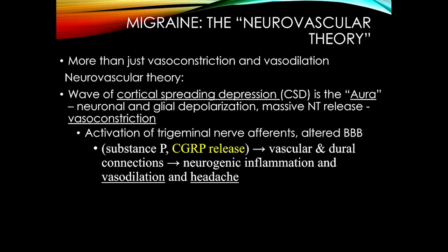Moving on to benign headache syndromes — migraine is the one you need to know the most about. Older thinking attributed it to vasoconstriction and vasodilation, but that is now known to be an epiphenomenon of something much more complex. You should be aware of cortical spreading depression, which seems to kick off a migraine headache and is associated with the aura, such as visual changes. This is like an electrical storm in the brain — there's a disruption of the blood-brain barrier, followed by vasodilation and the headache.